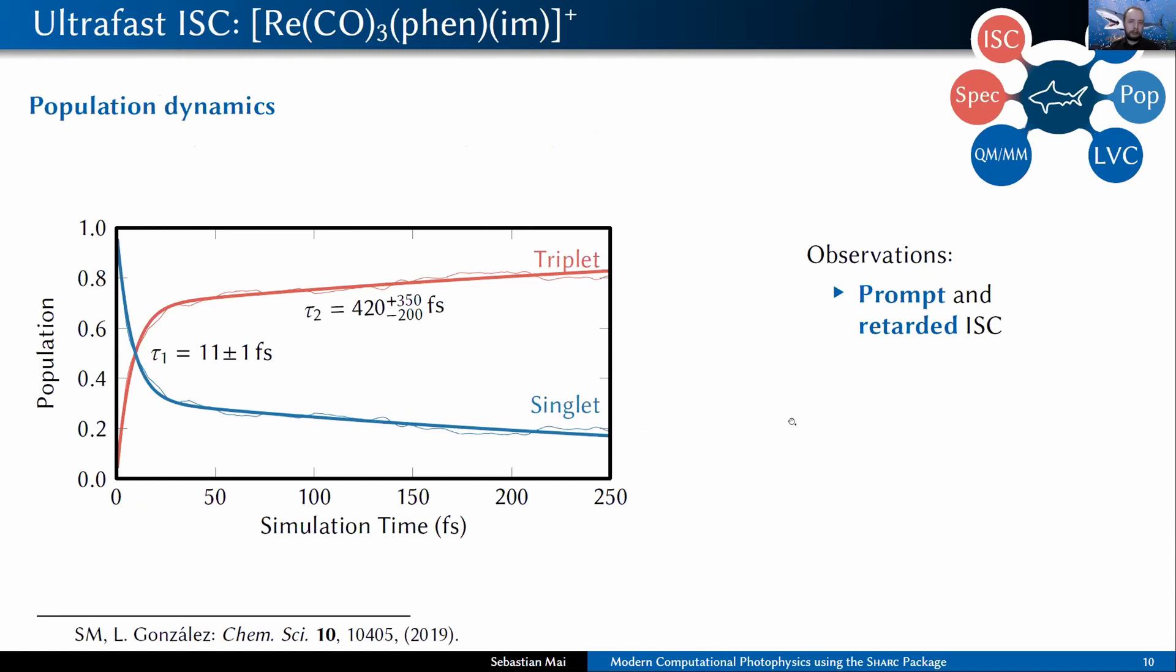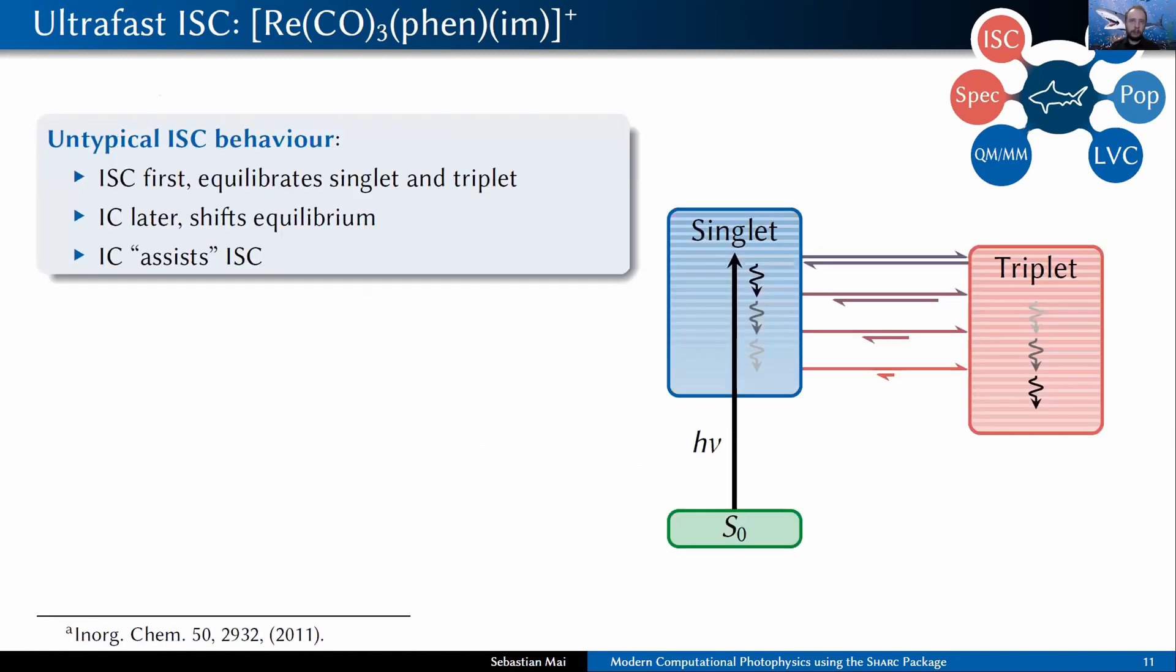We extracted the population data, fitted those, and then interestingly obtained two different time constants. One was extremely fast on the order of 10 femtoseconds and one was slower on the order of hundreds of femtoseconds. We analyzed the data very carefully and found out that this is actually due to two different physical processes. The first one is what we call electronic intersystem crossing because it even happens in the same way if you freeze the nuclear motion. So this is really just the formation of an electronic wave packet that evolves in time, whereas the second time constant is due to nuclear motion.